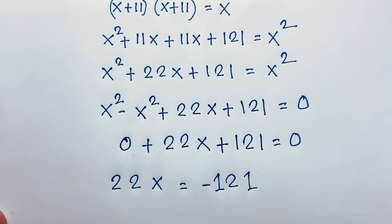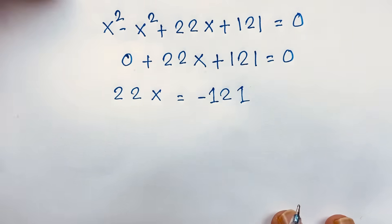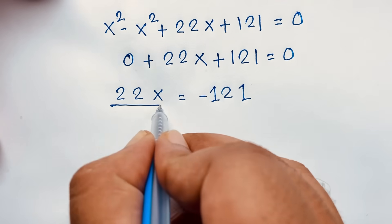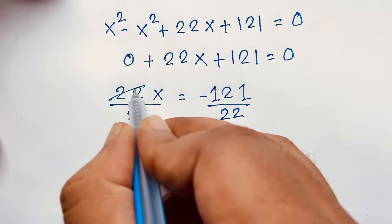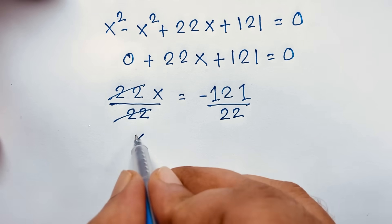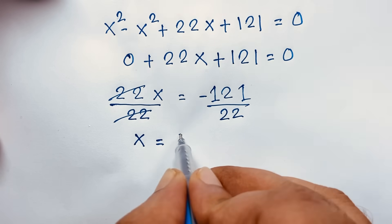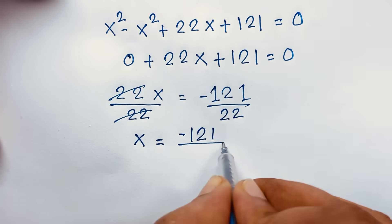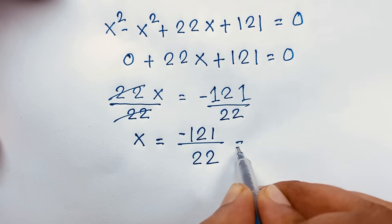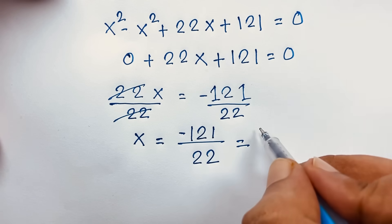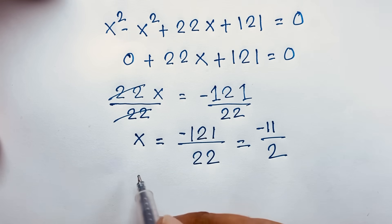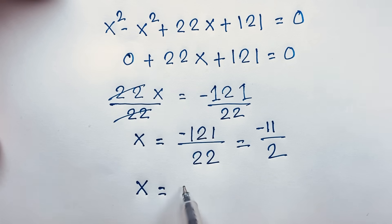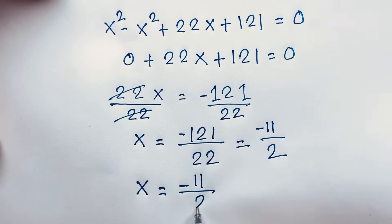I just move this 121 to this side, it will be negative 121. Then if I divide both sides by 22, it will be negative 11 over 2. So we find out x is equal to minus 11 over 2.